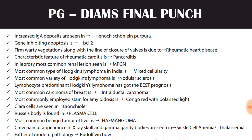Increased IgA deposits are seen in Henoch-Schönlein purpura. Gene inhibiting apoptosis is BCL2. Firm, warty vegetations along the line of closure of valves is due to rheumatic heart disease. Characteristic feature of rheumatic carditis is pan-carditis. In leprosy, the most common arena lesion seen is MPGN — membranoproliferative glomerulonephritis. Most common type of Hodgkin's lymphoma in India is mixed cellularity — just remember India is a country of mixed cultures, so most common in India is mixed cellularity.